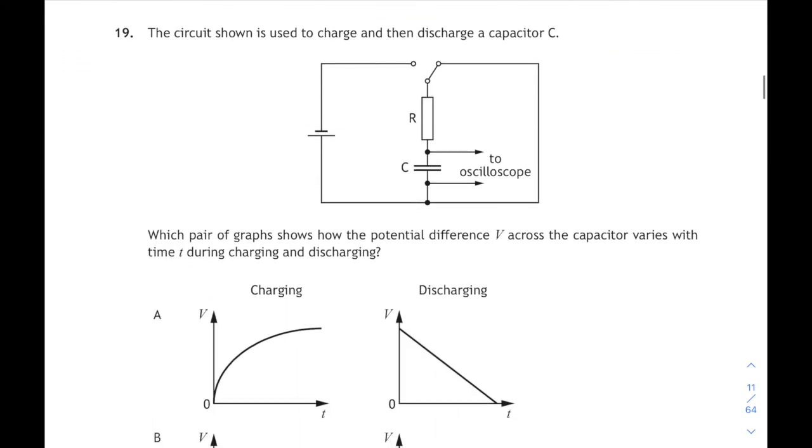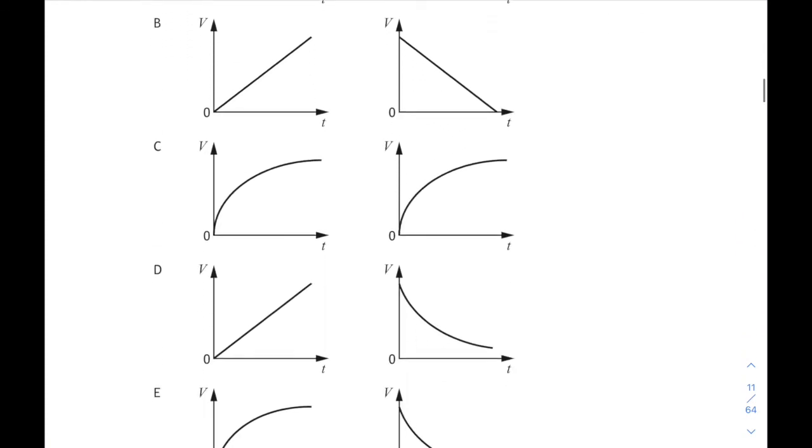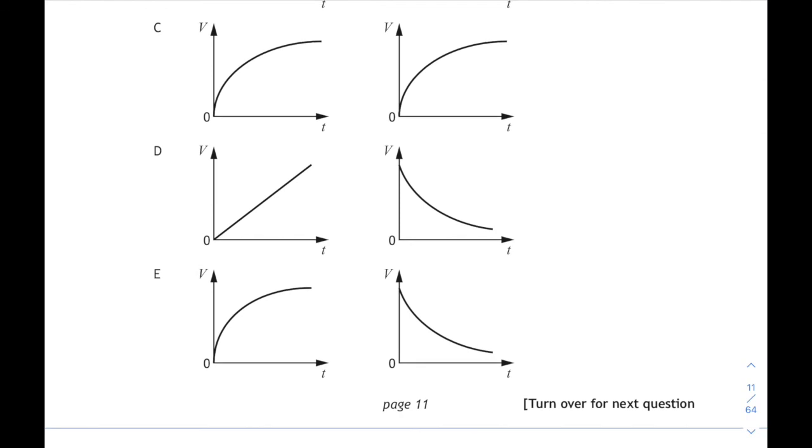Nearly there. Question 19, that's another capacitor question. If you get three capacitor questions in the multiple choice that probably means there isn't going to be a big capacitor question in the written paper. It says which pair of graphs shows how the potential difference v across the capacitor varies with time during charging and discharging. So we're looking for the graph of what happens to the voltage as it's charging and then the voltage as it's discharging. You should know the shape of these curves. They're both curves, so it's a curve increasing as it's charging up and it's a curve decreasing as it's discharging or emptying out. So it's answer E.